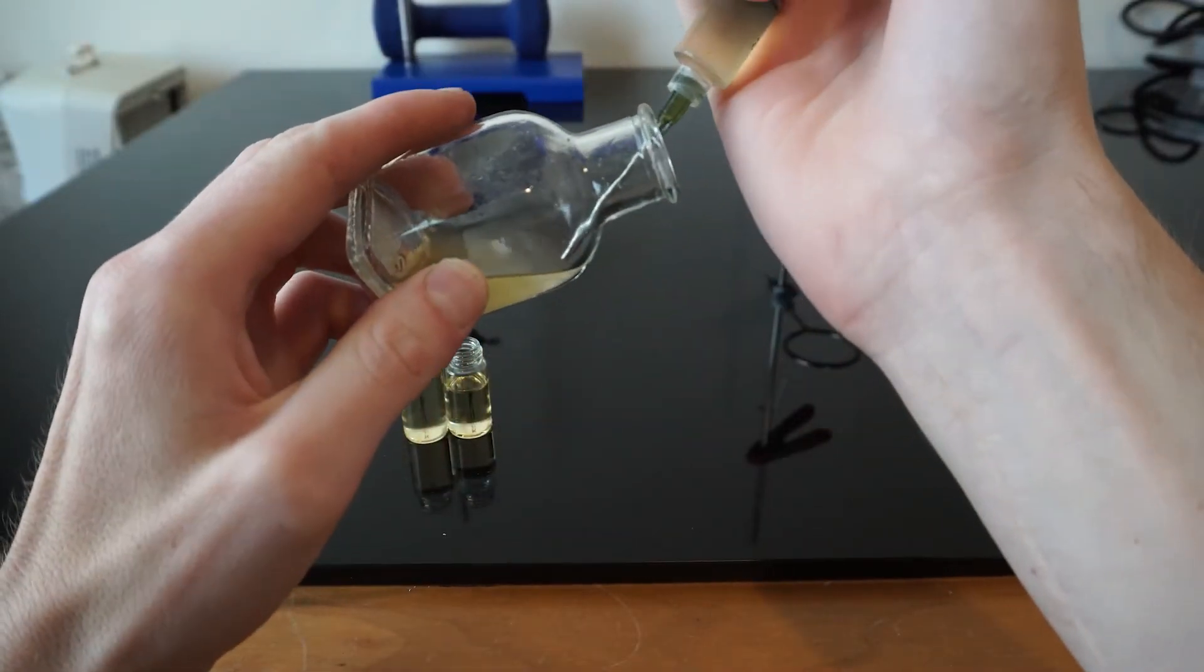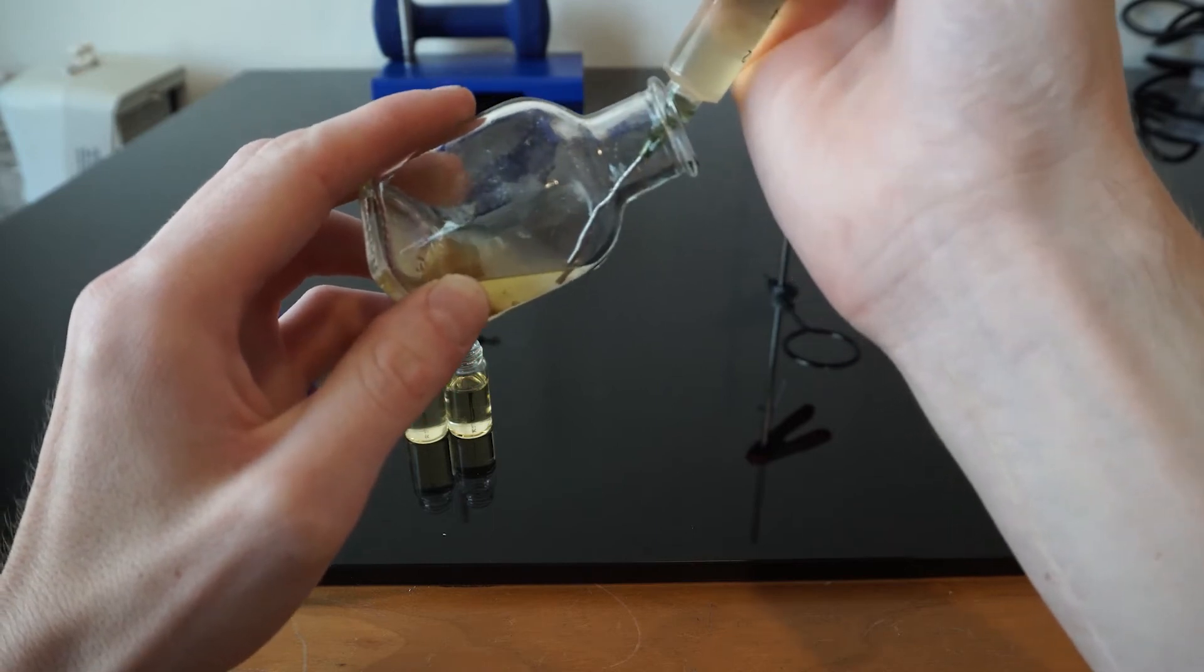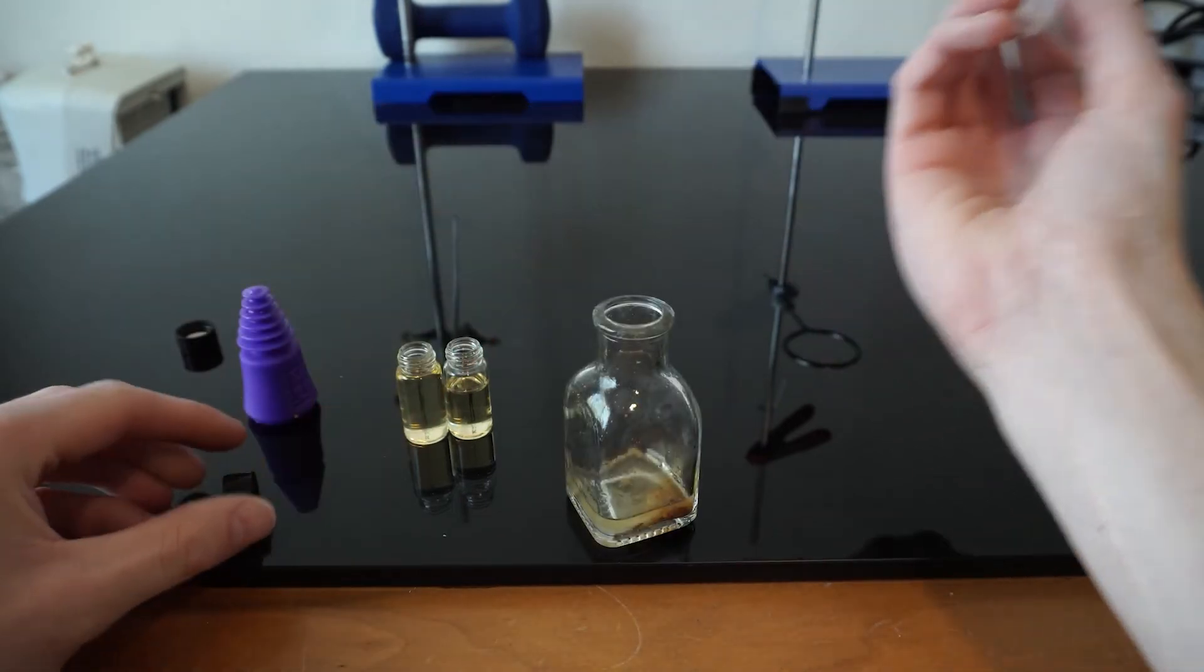To make sure I get as much of the pine sap mixture as possible, I tilt the vial to the side to let the heavier particles float to the bottom while I take the top layer.